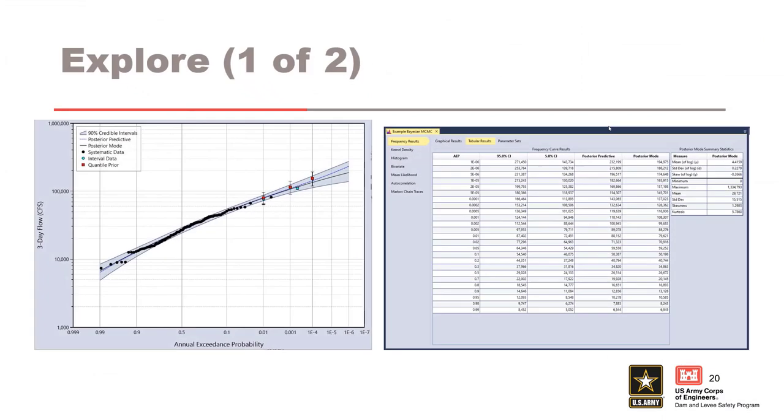Frequency results will be the primary exploration tool. Shown on the left is a volume frequency curve. Shown are the posterior predictive curve with a 90% credible interval and the posterior mode curve. Shown on the right is the tabular results of the volume frequency curve, including the posterior mode summary statistics.